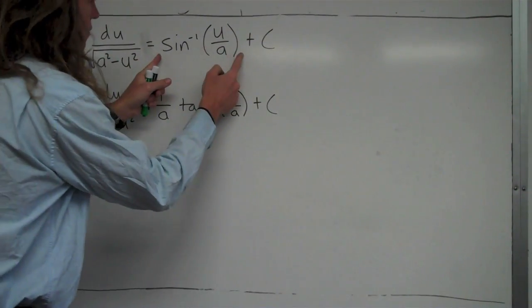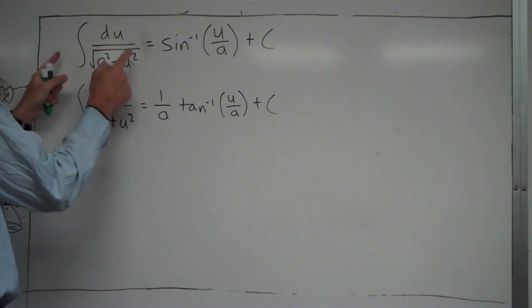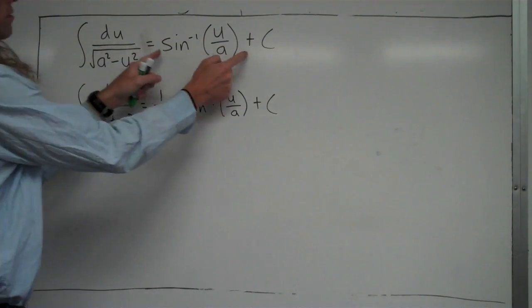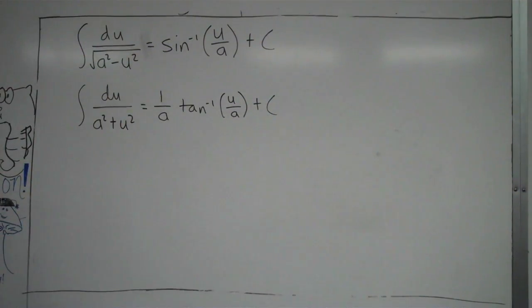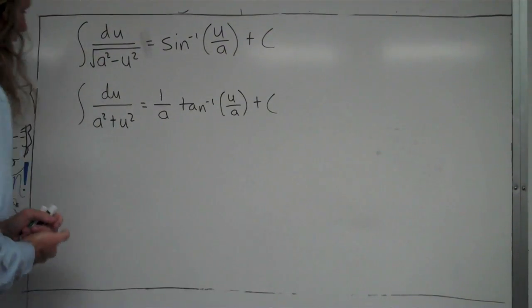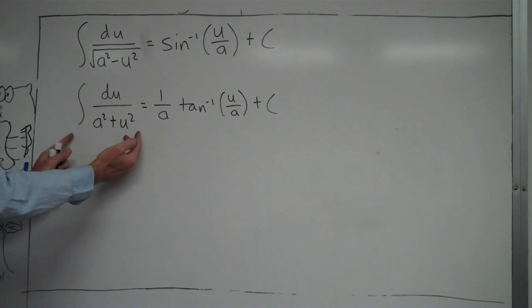They realized that the derivative of this equals that, so therefore the anti-derivative of this equals this. Same thing with the tangent one as well. So if you have something in this format, the integral would be that.